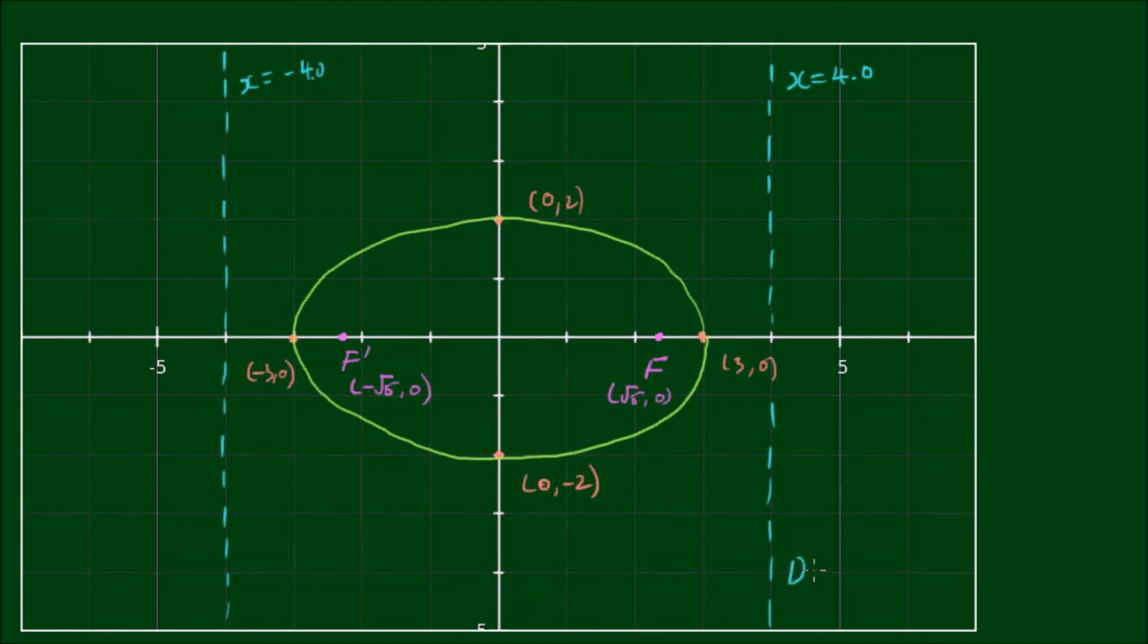So this is the directrix x equals 4.0. And we also have one at x equals -4.0. So let's label this as D, and this one is D'. And let's label these points as well. So we have the point A here, which is the positive x-intercept. We have the point A', the negative x-intercept. We have the point B, the positive y-intercept, and the point B', the negative y-intercept.